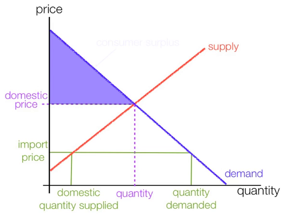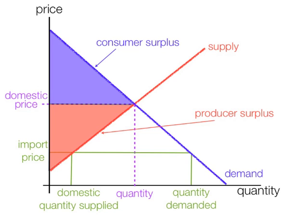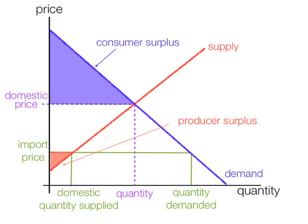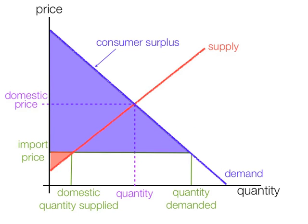Now before imports, this is the level of consumer surplus and this is the level of producer surplus. After imports, producer surplus shrinks — in fact it shrinks to that level right there, much less than before because they're producing much less because of the imports. Since consumers see a much lower price, consumer surplus increases to that level there.